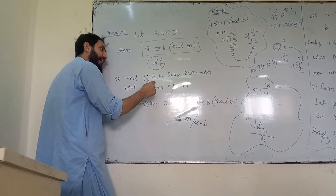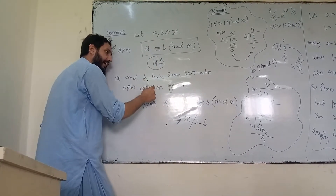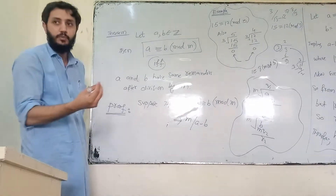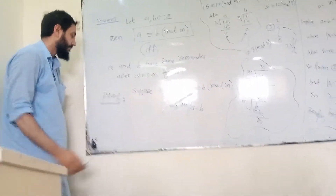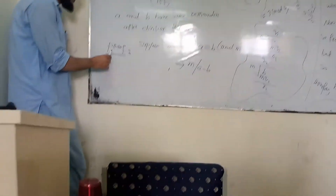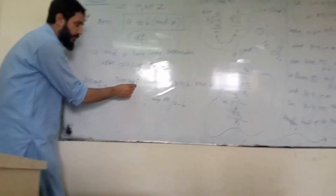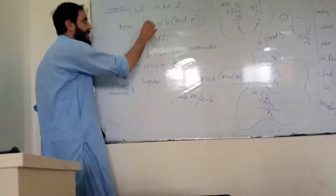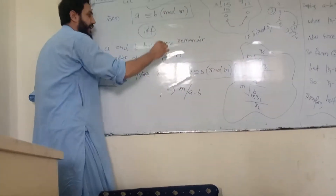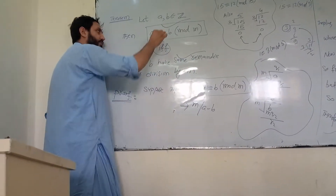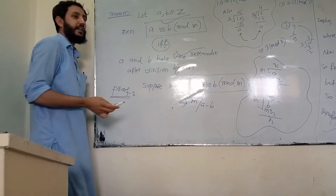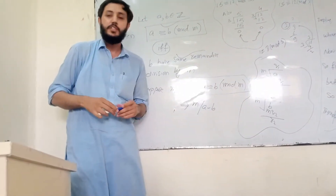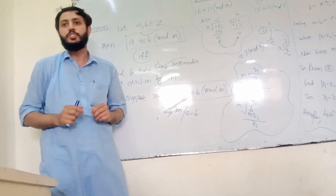If congruent, remainder will be the same. And if the remainders are the same, they will be congruent. This theorem needs proof. So the proof: suppose that A is congruent to B. We need to prove both implications.